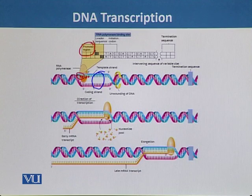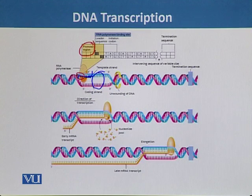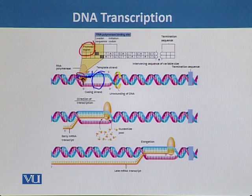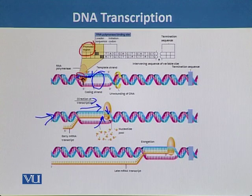These transcription factor proteins include helicase enzymes, which help in the unwinding of the DNA molecule. After unwinding, RNA polymerase reads the template strand — also called the antisense strand, shown here in blue — and adds complementary nucleotides. We can see in the diagram that RNA polymerase is moving and reading the DNA template in the rightward direction.